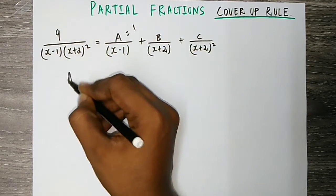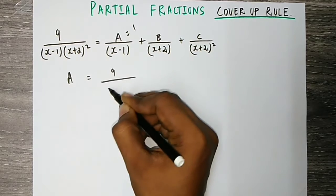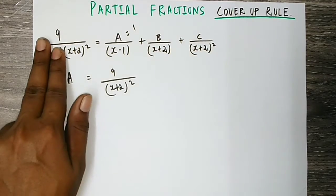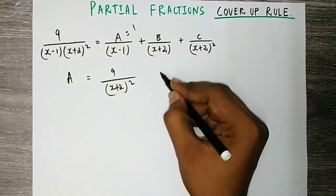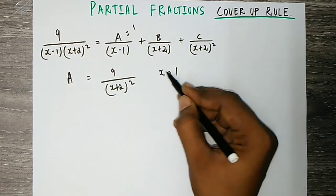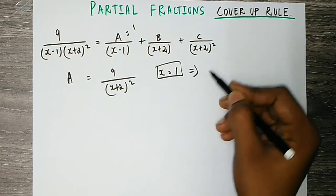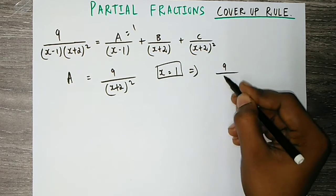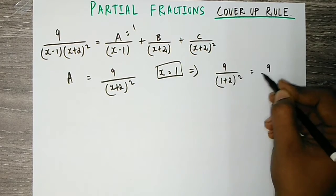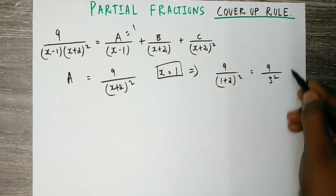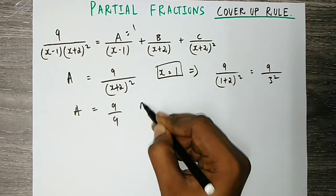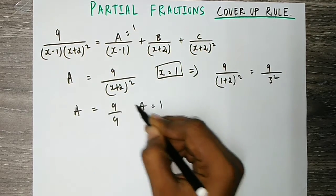That is why A is equal to 9 divided by (x plus 2) whole square, with x equal to 1. So x equal to 1 gives 9 divided by (1 plus 2) whole square. 1 plus 2 is 3, so 9 divided by 3 squared is 9 divided by 9. So A is equal to 1. It's very simple.